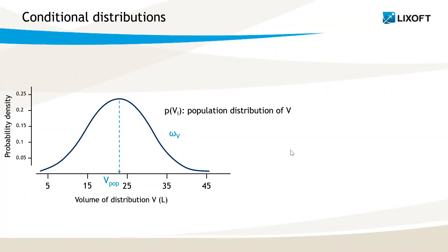Let's first recall what the conditional distribution is. After running SAM, we have estimated a population distribution for each parameter, for example here the volume of distribution V. This distribution is defined by the typical value Vpop and the standard deviation of the random effect omega_V. It represents the range of values individuals from this population can have and characterizes the population as a whole.